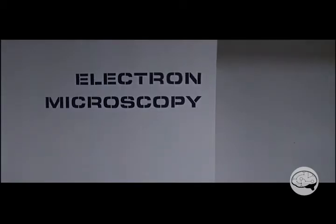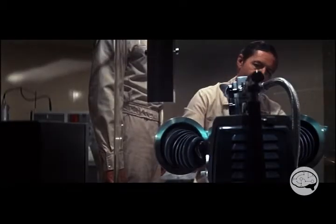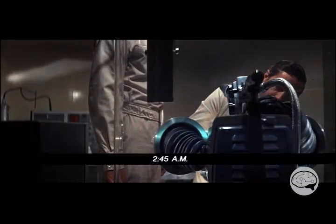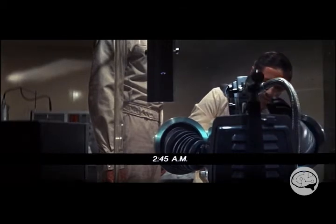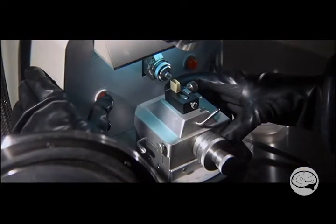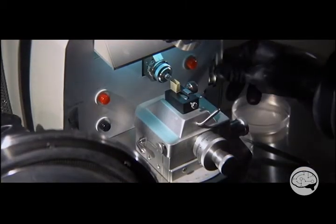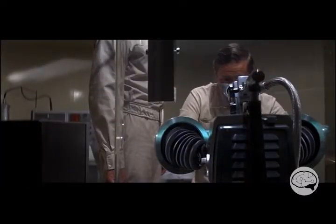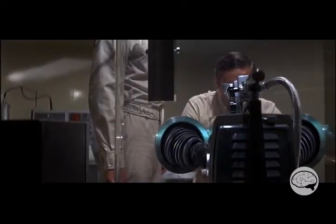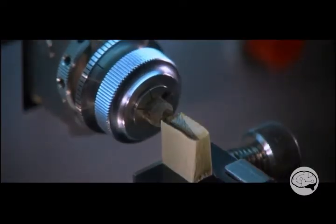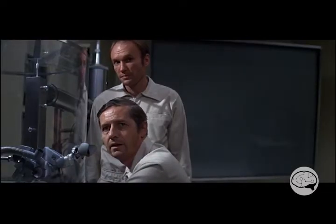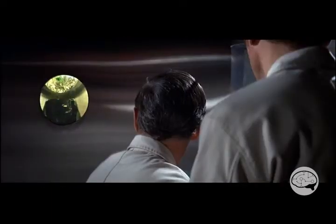We start off in the electron microscopy room — that is a good start, they even spelled it right. Right off the bat, we're doing sample prep, and this is fantastic. As all microscopists know, sample prep is 90% of the work, and this is very realistic. We've got an ultramicrotome inside a glove box.